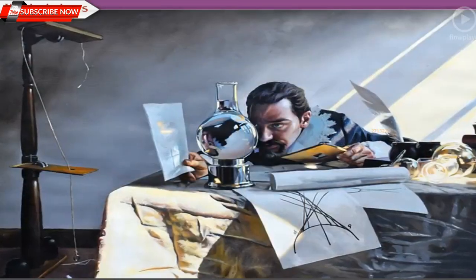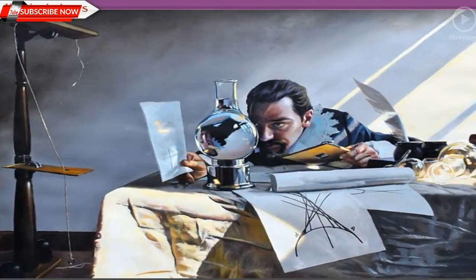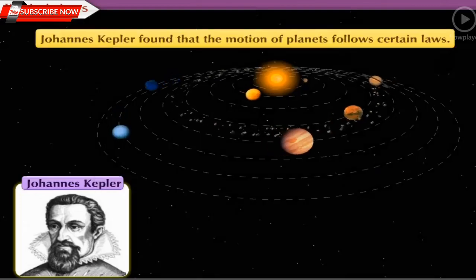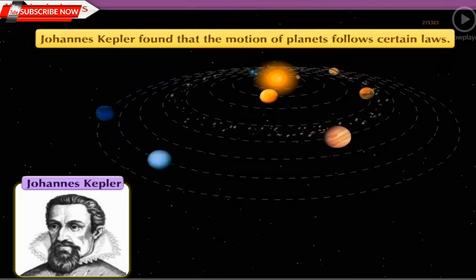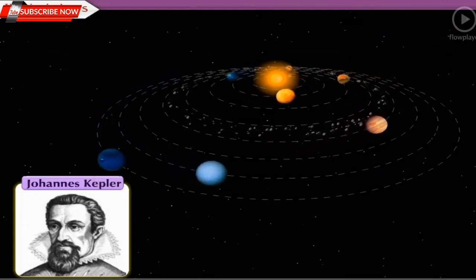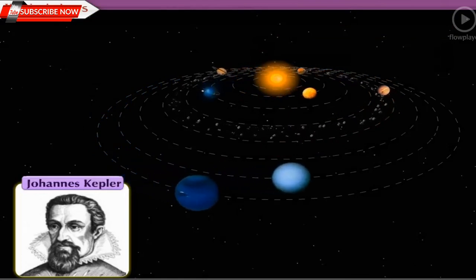Johannes Kepler studied the data available at that time. He found that the motion of planets follows certain laws. He stated three laws describing planetary motion.